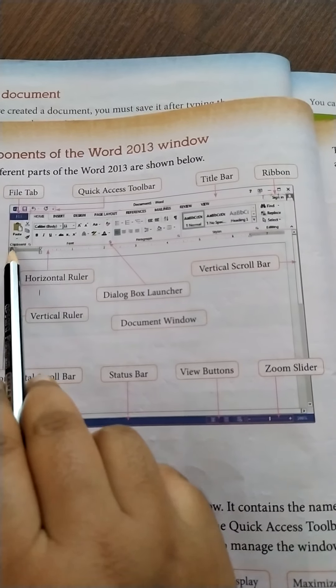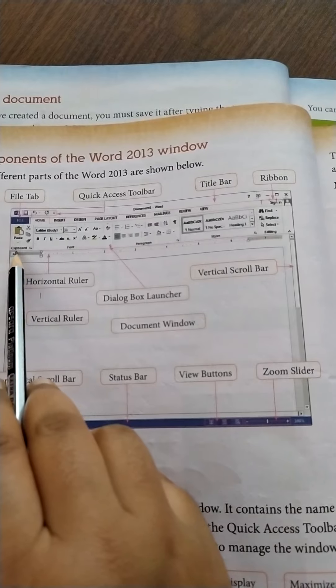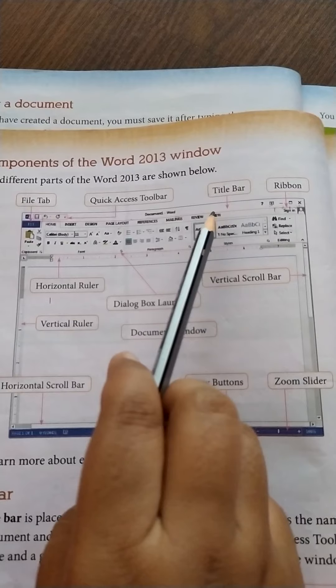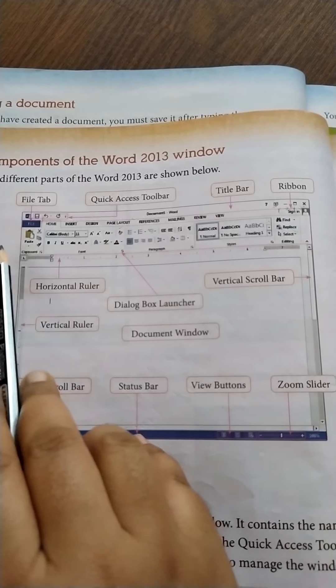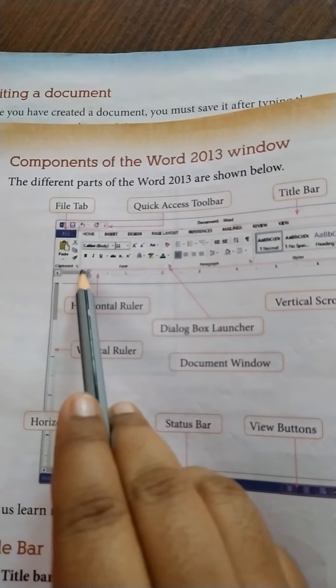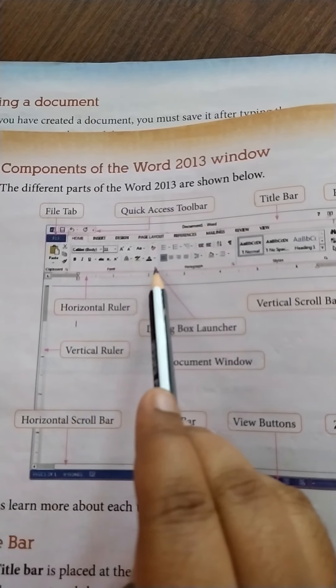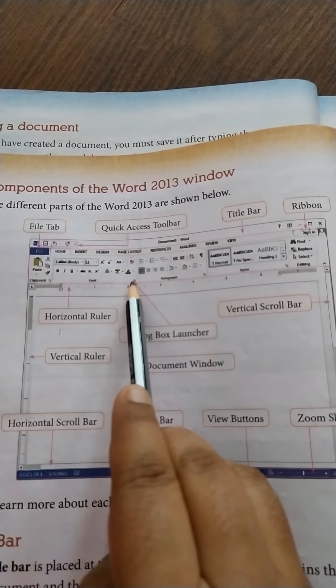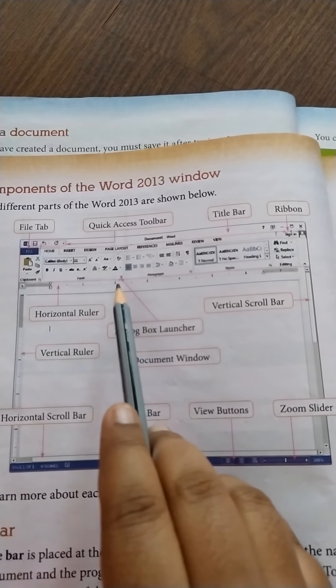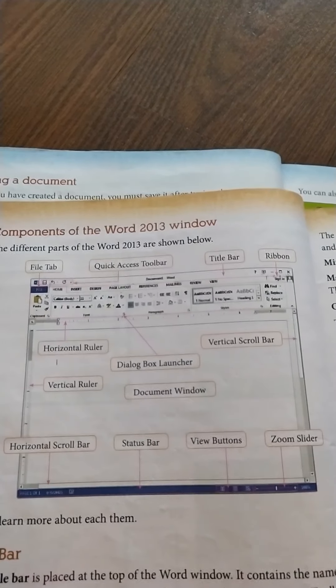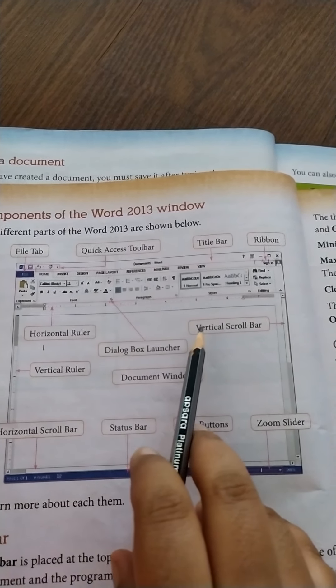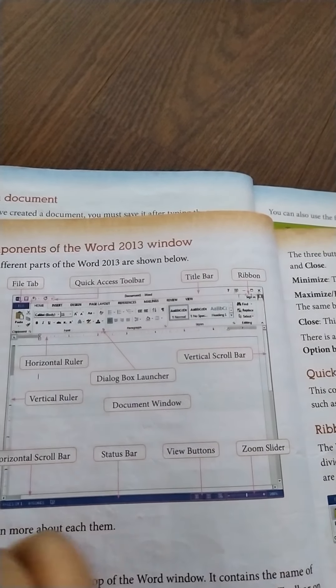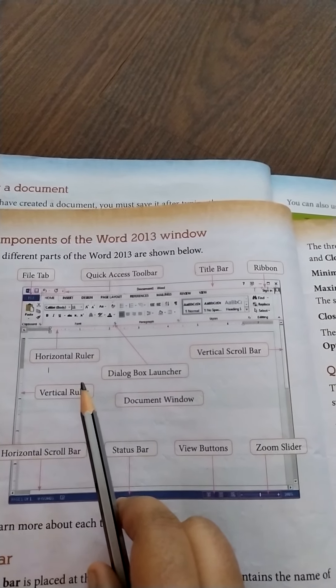The group names are also mentioned. Like the home tab is divided into clipboard, font, paragraph, etc. Each group has small buttons at the end. That is called the dialogue box launcher. This small arrow icon at the bottom right of some groups is called the dialogue box launcher, and it is used to display additional commands related to that group.